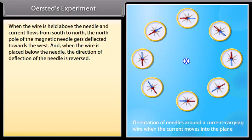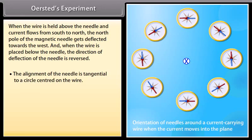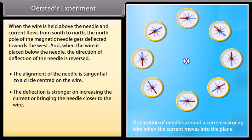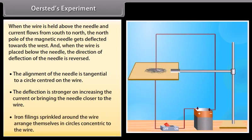When the wire is placed below the needle, the direction of deflection of the needle is reversed. The alignment of the needle is tangential to a circle centered on the wire. The deflection is stronger on increasing the current or bringing the needle closer to the wire. Iron filings sprinkled around the wire arrange themselves in circles concentric to the wire.